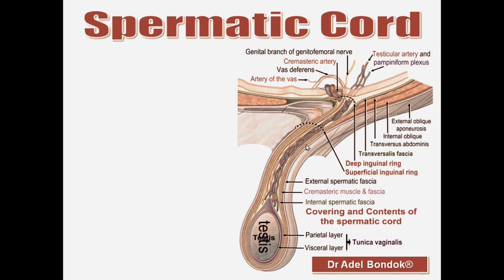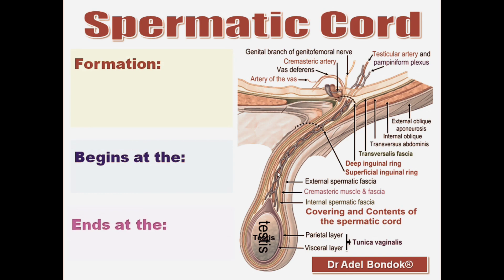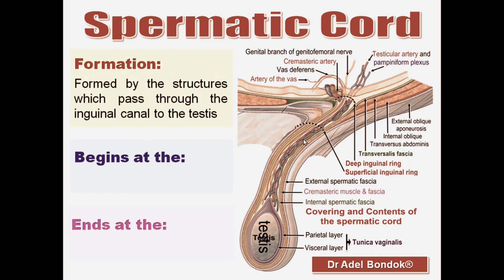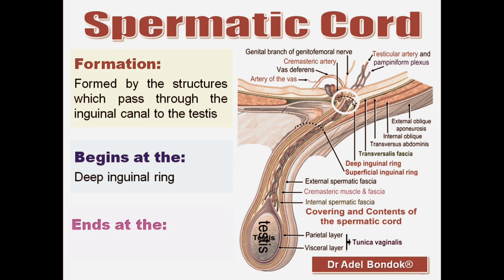The spermatic cord is formed by the structures which pass through the inguinal canal to the testis. It begins at the deep inguinal ring and it ends at the posterior border of the testis.